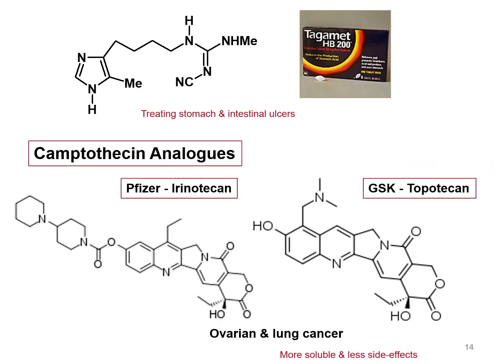Here we can see the structure of camptothecin analogues, used for treating stomach and intestinal ulcers, which also contain heterocyclic rings. Other examples are irinotecan and topotecan, both used for the treatment of ovarian and lung cancer. Irinotecan has a large and complicated structure containing many heterocyclic rings, and topotecan also contains heterocyclic rings.